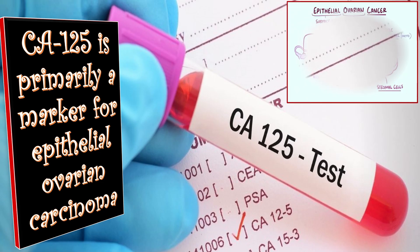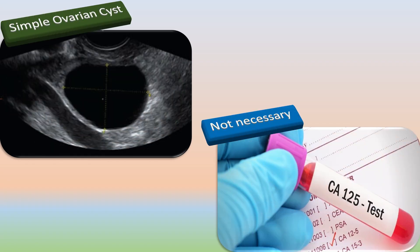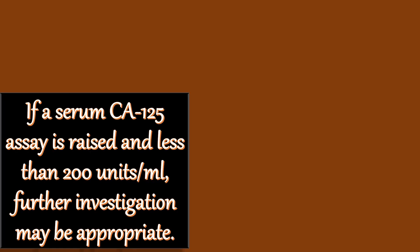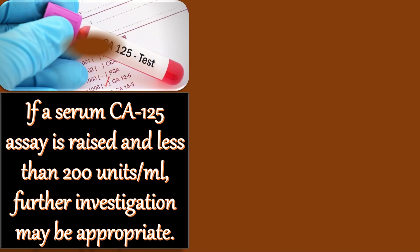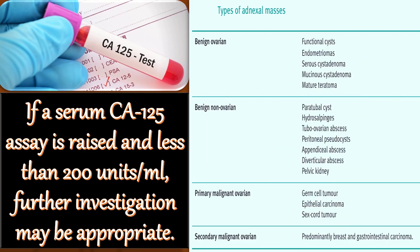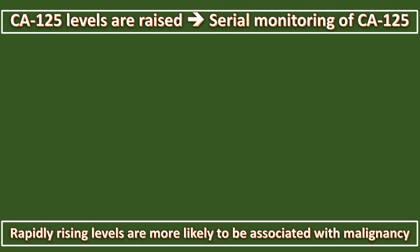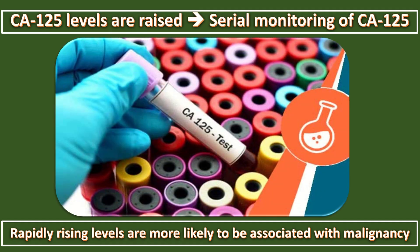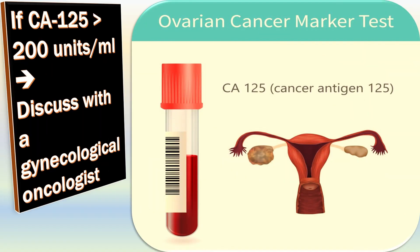A serum CA-125 assay is not necessarily done when a clear ultrasonographic diagnosis of simple ovarian cyst has been made. If CA-125 is raised and less than 200 units/ml, further investigation may be appropriate to exclude common differential diagnoses. Serial monitoring of CA-125 may be helpful, as rapidly rising levels are more likely to be associated with malignancy than high levels which remain static. If CA-125 is more than 200 IU/ml, discussion with a gynecological oncologist is recommended.